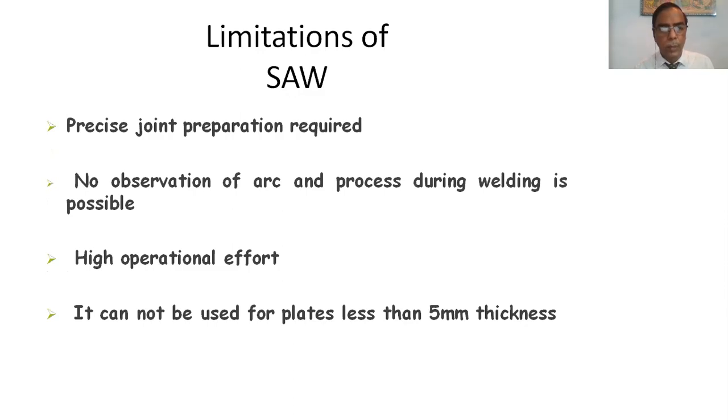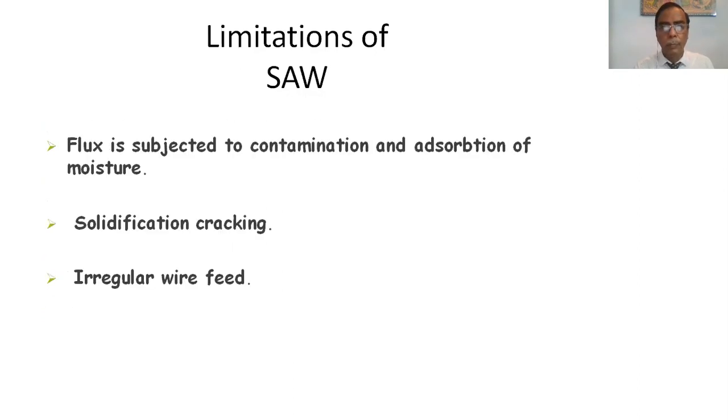Limitations. Precise joint preparation required. No observation of arc and process during welding is possible. High operational effort. It cannot be used for sheets less than 5 millimeter thickness. Flux is subject to contamination and absorption of moisture. Solidification cracking is a limitation. Irregular wire feed also is a limitation.